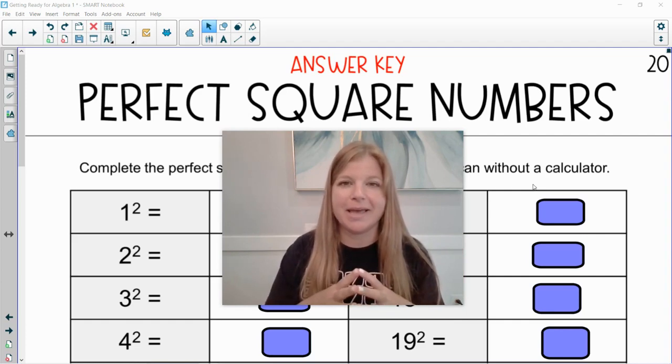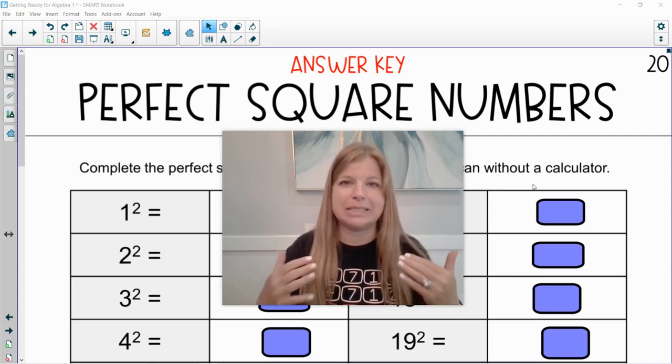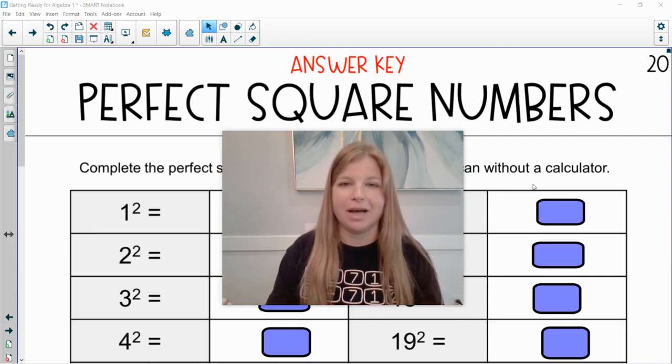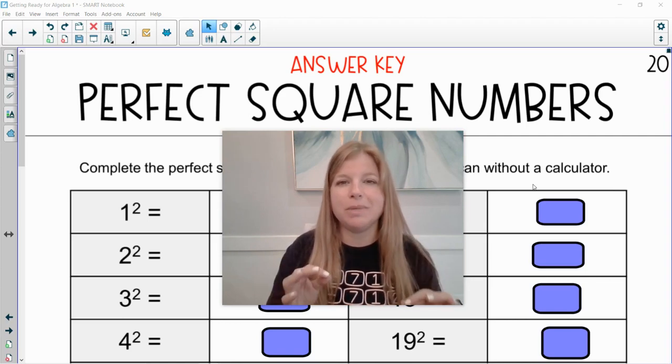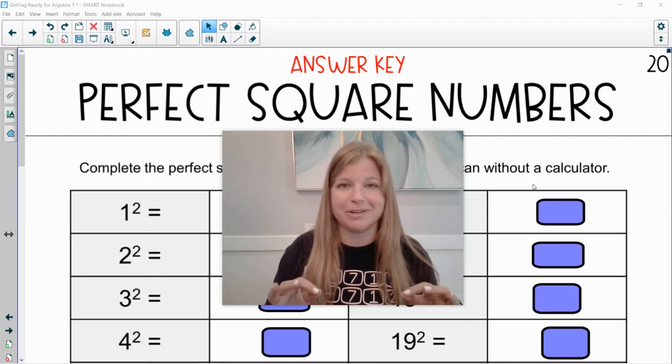I'm going to guide you through them today and then you should know a few more that are nice ones like 40 squared, 50 squared, 60 squared and so on. So I'm going to show you a few tips and tricks, a couple patterns, a couple cool things to notice about perfect squares and then you want to make sure that you know as many of these as you can. It's going to make your life way easier in algebra 1 for sure. Let's take a look.